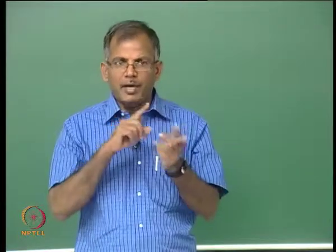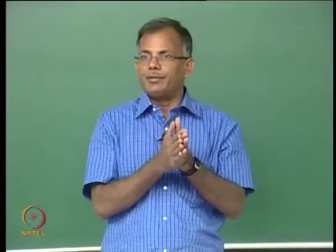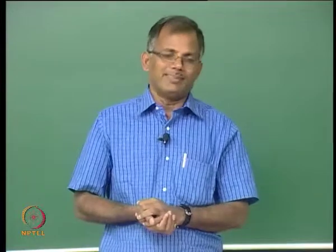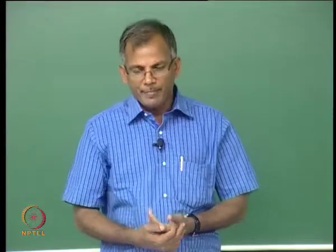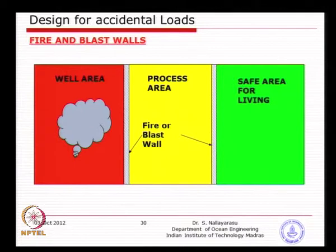Sometimes you combine the fire and blast wall together — a firewall that can take a certain amount of loading, which is a combined effect. One is a structural requirement; the other is performance with regard to temperature. The external temperature needs to be reduced to a certain level inside the building. If there is a fire at 900 degrees, the insulating material must not conduct that temperature to the other side above a defined limit. The same wall can be designed for a certain pressure due to blast — it is a combined fire and blast wall.